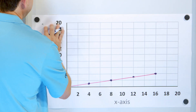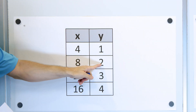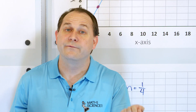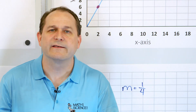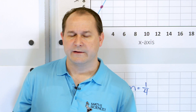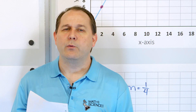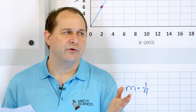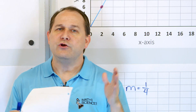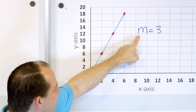The idea of the constant of proportionality being 3 is exactly the same as the slope of the line being 3, so M = 3. For the other line, the slope is one-fourth — we get one-fourth when we divide Y by X for every pair. Because the slope of the first line (3) is larger than the slope of the second line (one-fourth), the first line is steeper.